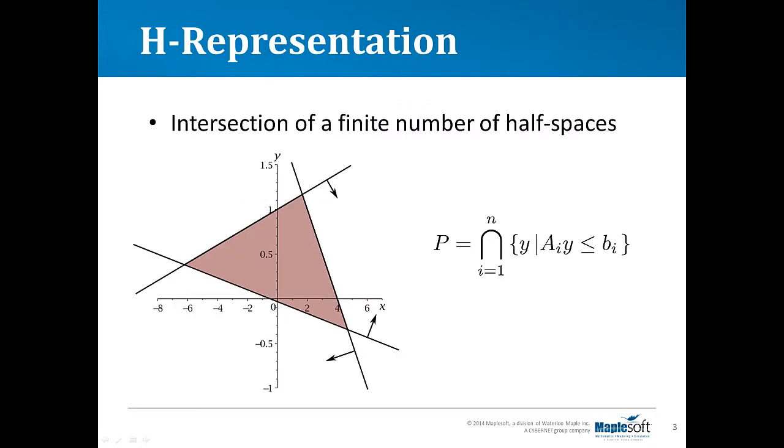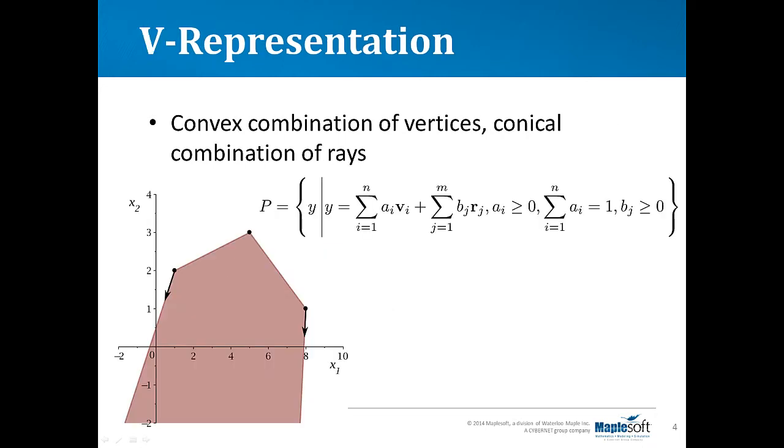It can be represented using its half-space representation, or H representation, that models the set as the intersection of a finite number of half-spaces. Alternatively, sets can be represented using the vertex representation, or V representation, where the set is a convex combination of vertices and a conical combination of rays.